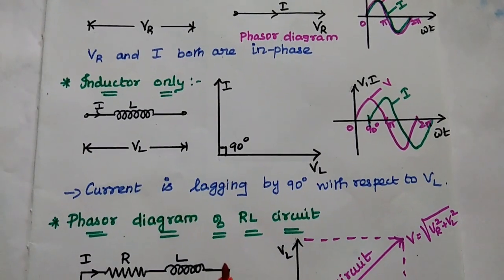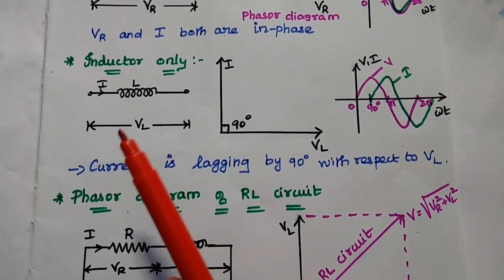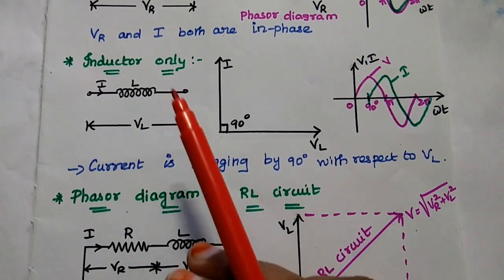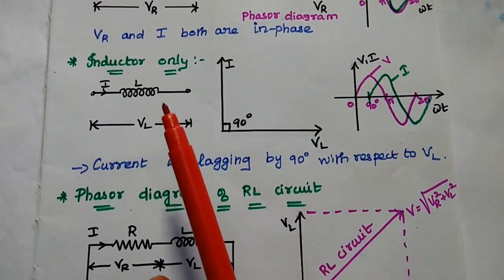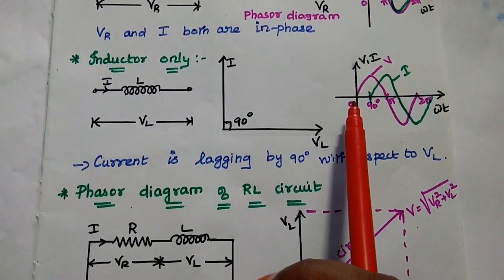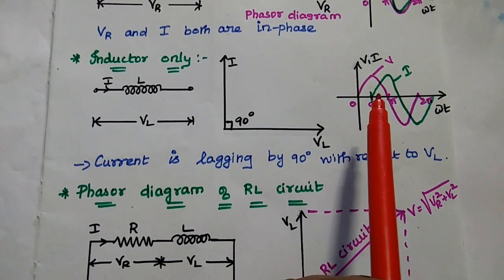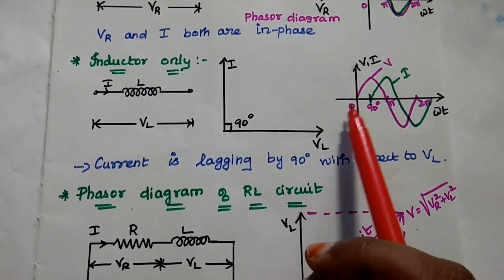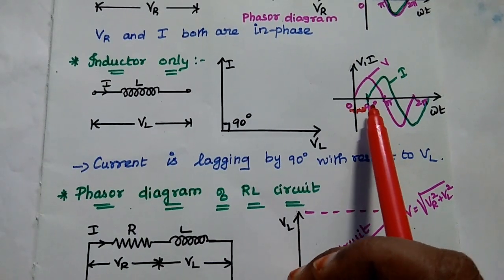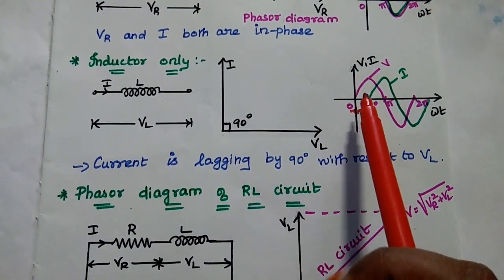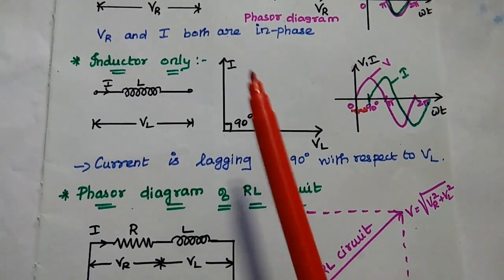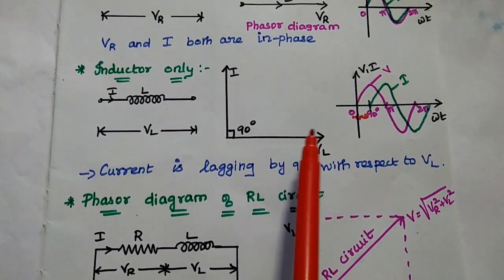Next, we consider the inductor-only circuit. When current flows through the inductor, it creates magnetic flux around it. The inductor opposes or changes the phase of the current. If the voltage starts at point 0, then the current lags behind the voltage by 90 degrees. When the voltage is maximum, the current is minimum. We can represent the phasor diagram such that the current lags by 90 degrees with respect to VL.